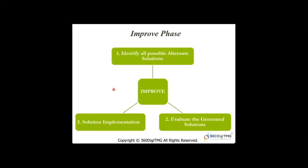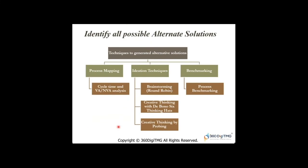These are the three key steps as part of the Improve Phase. In Step 1, we identify all possible alternate solutions. Then in Step 2, we evaluate those generated solutions to select the one that best suits us. Post that, we move into Step 3: Solution Implementation.